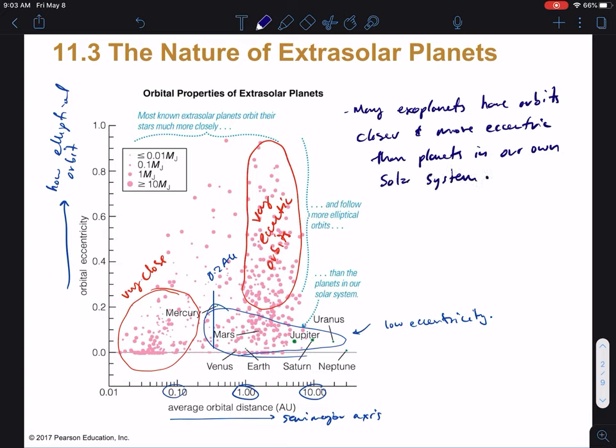Now a couple of things we can see from this is that there's many extrasolar planets here that are very close to their host stars. And there are extrasolar planets here that are very eccentric orbits. So that's the first thing to make a note of over here is that many exoplanets have orbits closer and more eccentric than planets in our own solar system. So in that respect, they don't really look a lot like ours. Also you can see here, notice these dots represent the size of the exoplanet. And many of these exoplanets are very large.